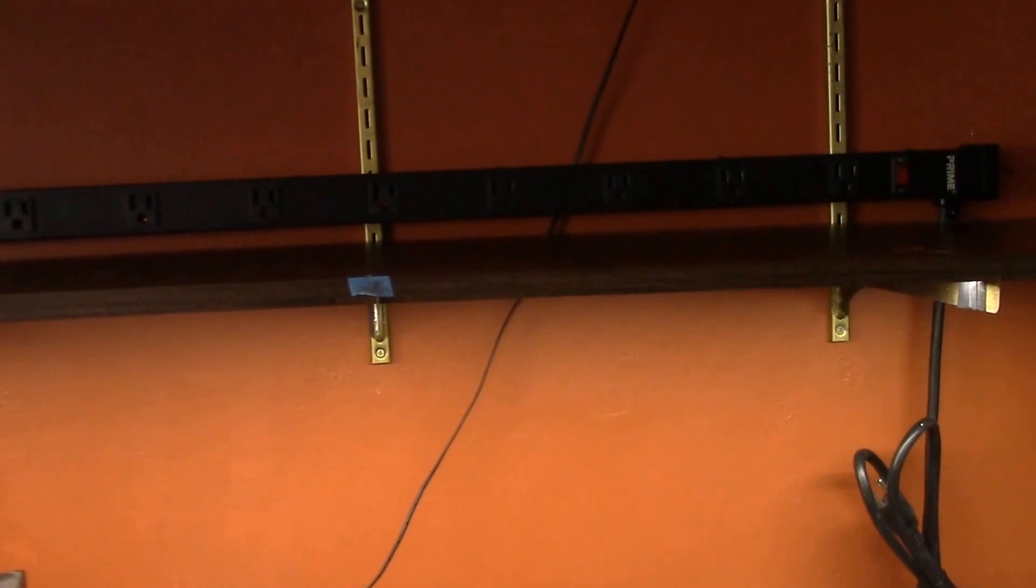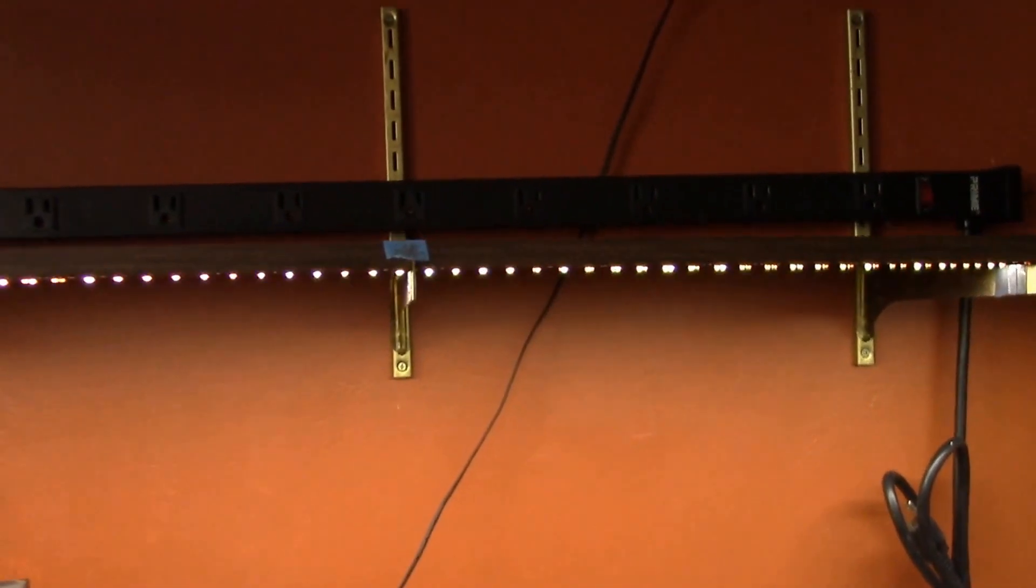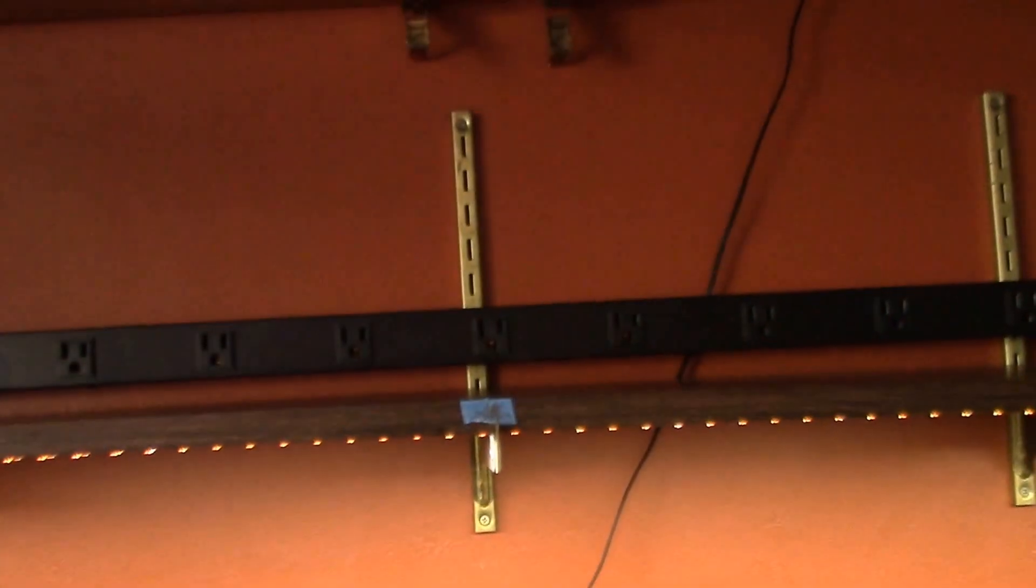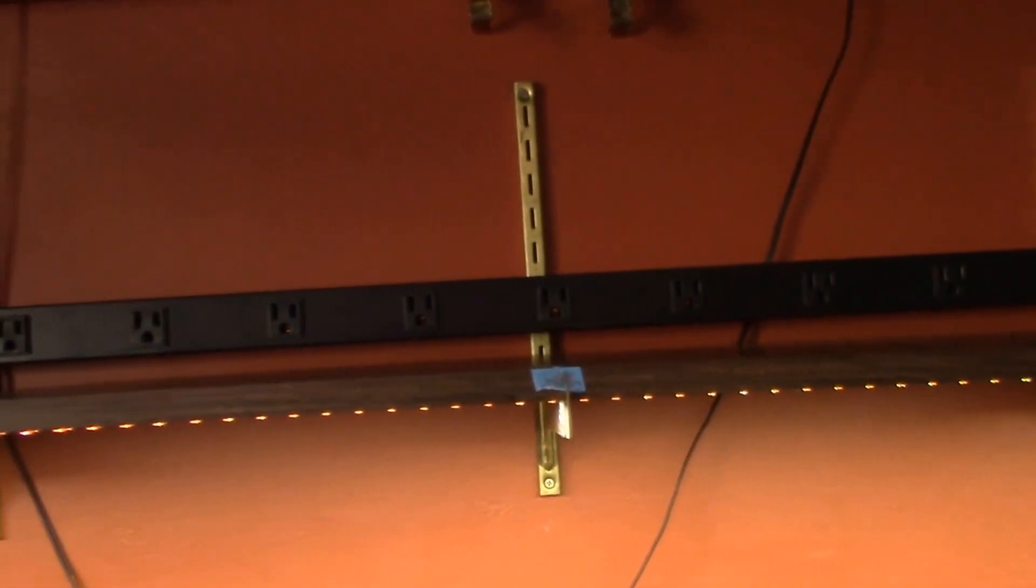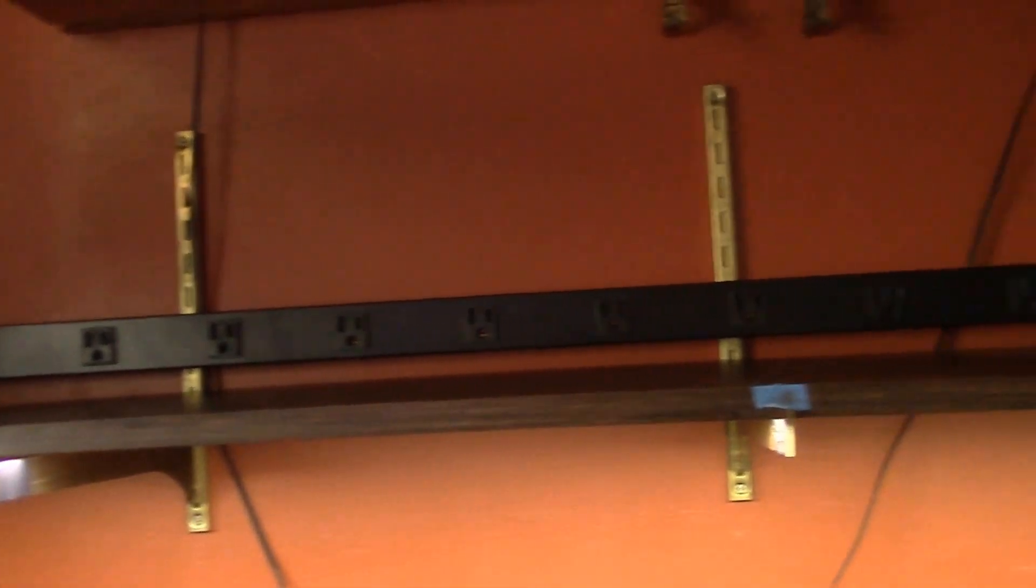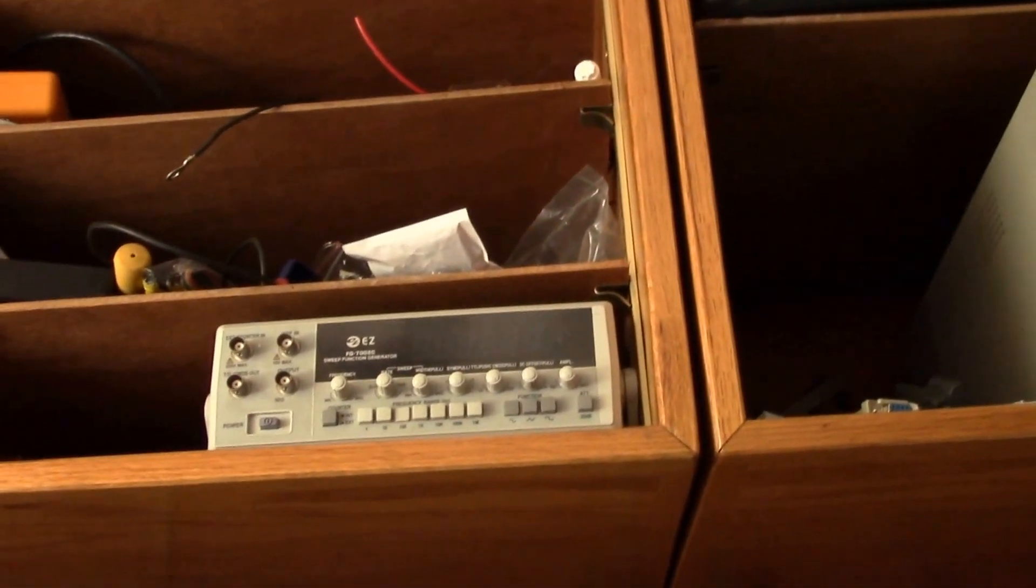And even from down below they start to show up a little bit, just got them powered off my bench power supply right now. So I've got an outlet strip up above and then I can power all my various equipment up there off of that outlet strip and get rid of all the power cords running down the wall.